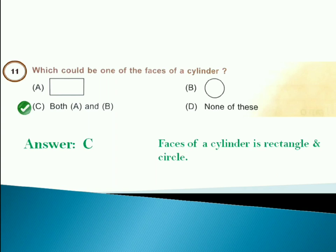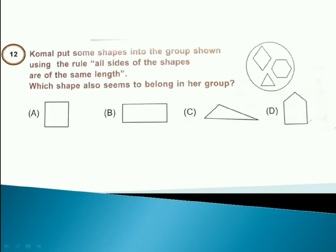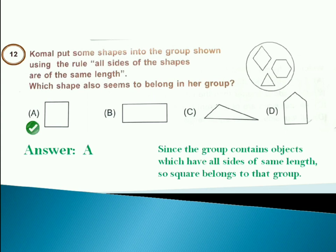Next question. Komal put some shapes into the group shown using the rule. All sides of the shape are of the same length. Which shape also seems to belong in her group? Answer is option A. The square has all sides of same length. And as per the rule, it belongs to the group.